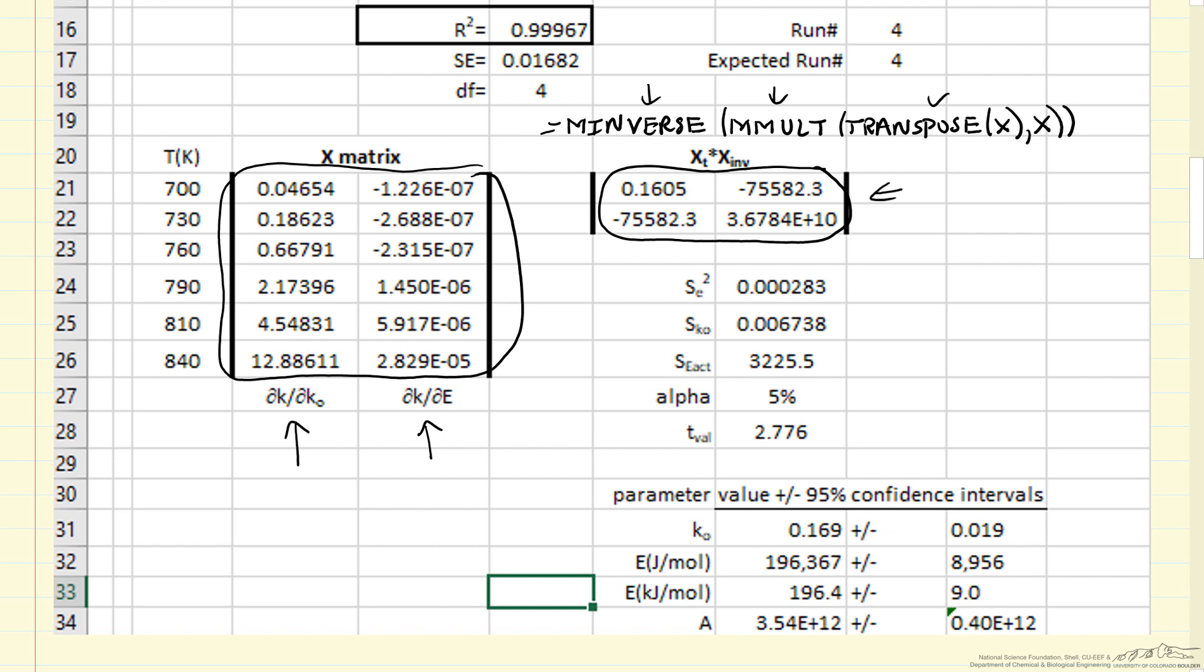We're almost finished. We need a few more things. We're interested in 95% confidence limits, so this alpha is 5%. This T value from T distribution, again, is a formula in Excel. Here's the formula to get the T value where alpha, we define this cell as alpha. Now we calculate this standard error squared. So it's this term here, squared, which is the same as the sum of the squares that we minimize, divided by degrees of freedom. Degrees of freedom is number of data points minus number of parameters, so that's 4 in this case.